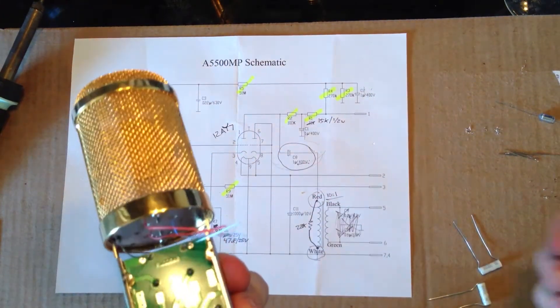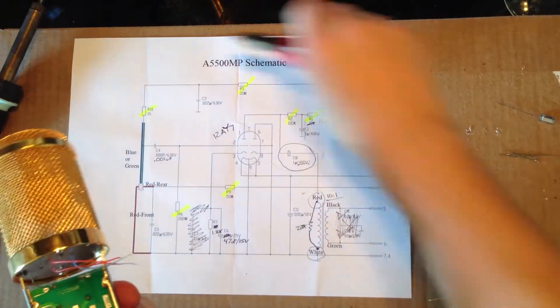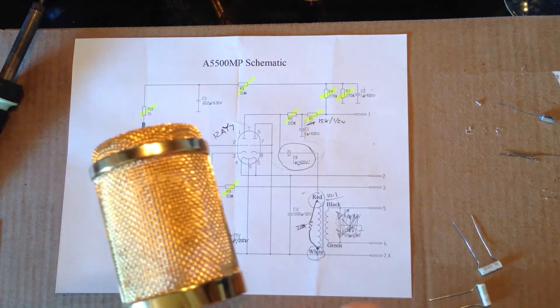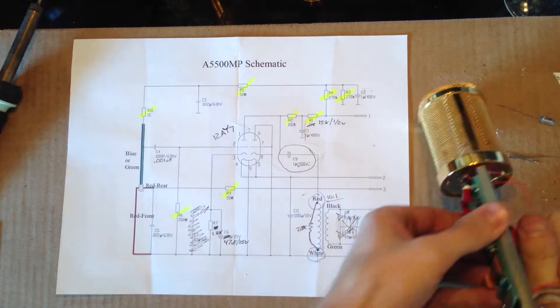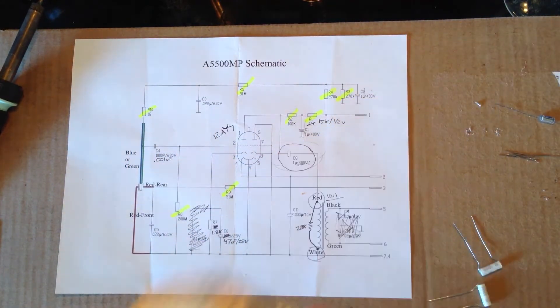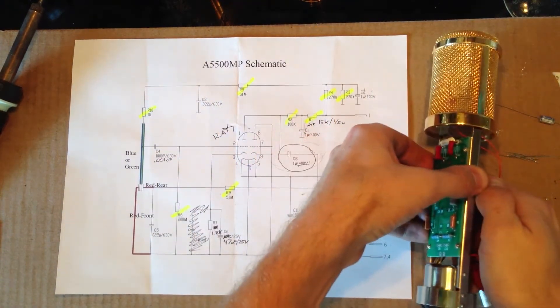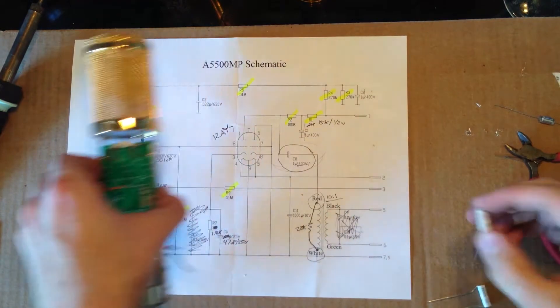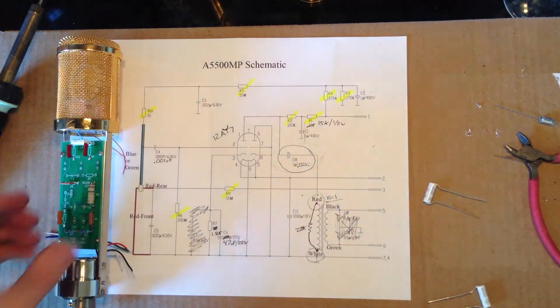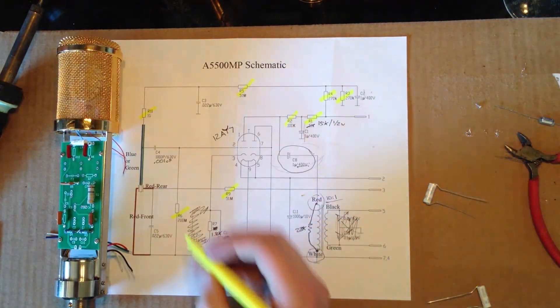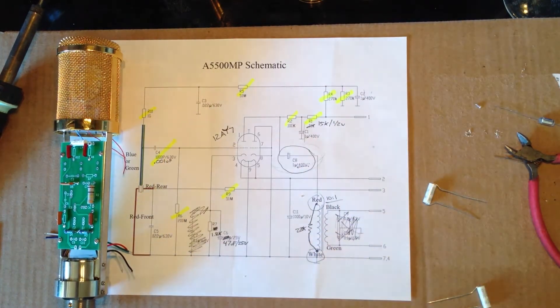And so now what we can do is we can go ahead and take these and trim this off. Okay, so C4 is done. Mark that off.